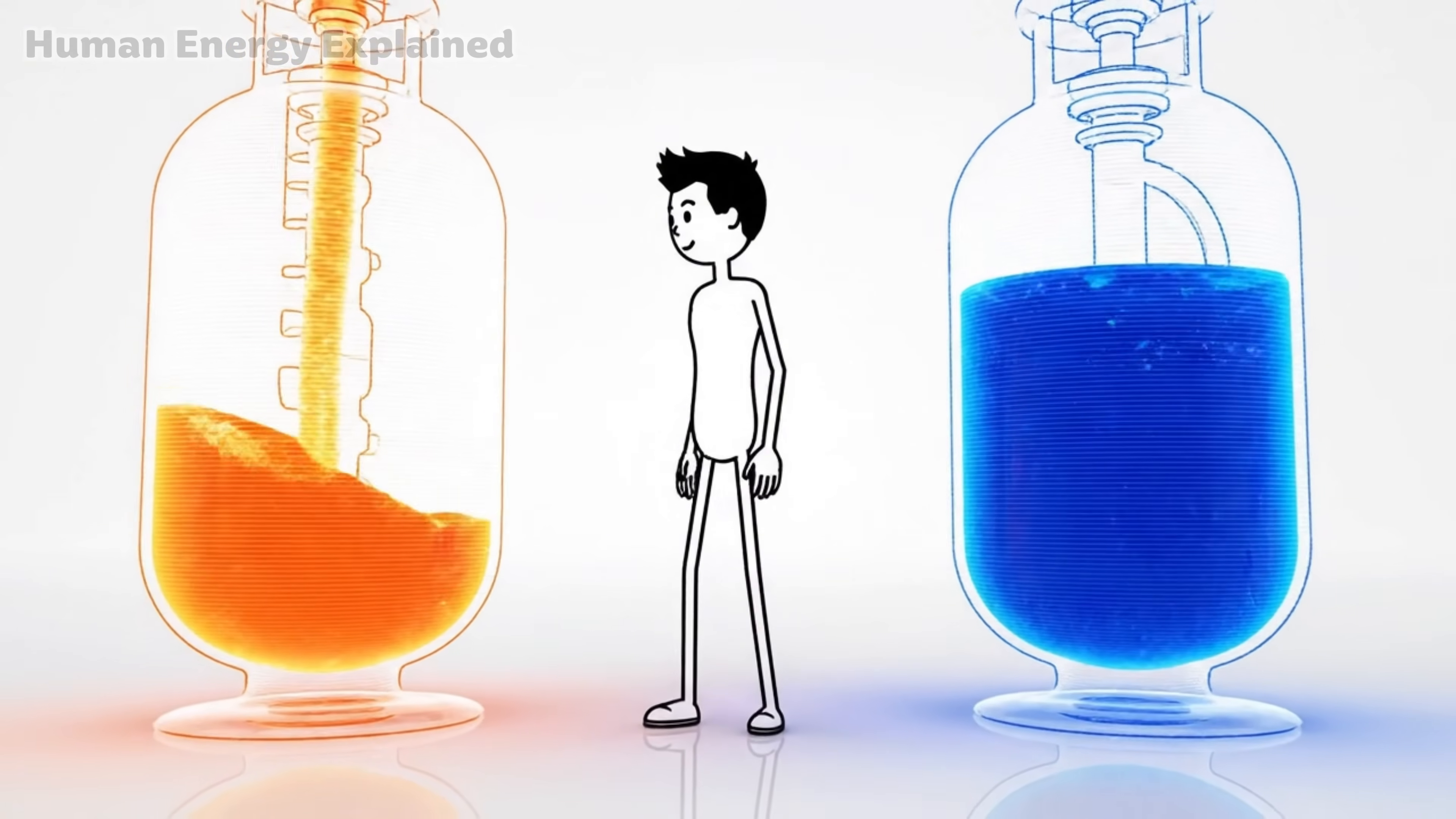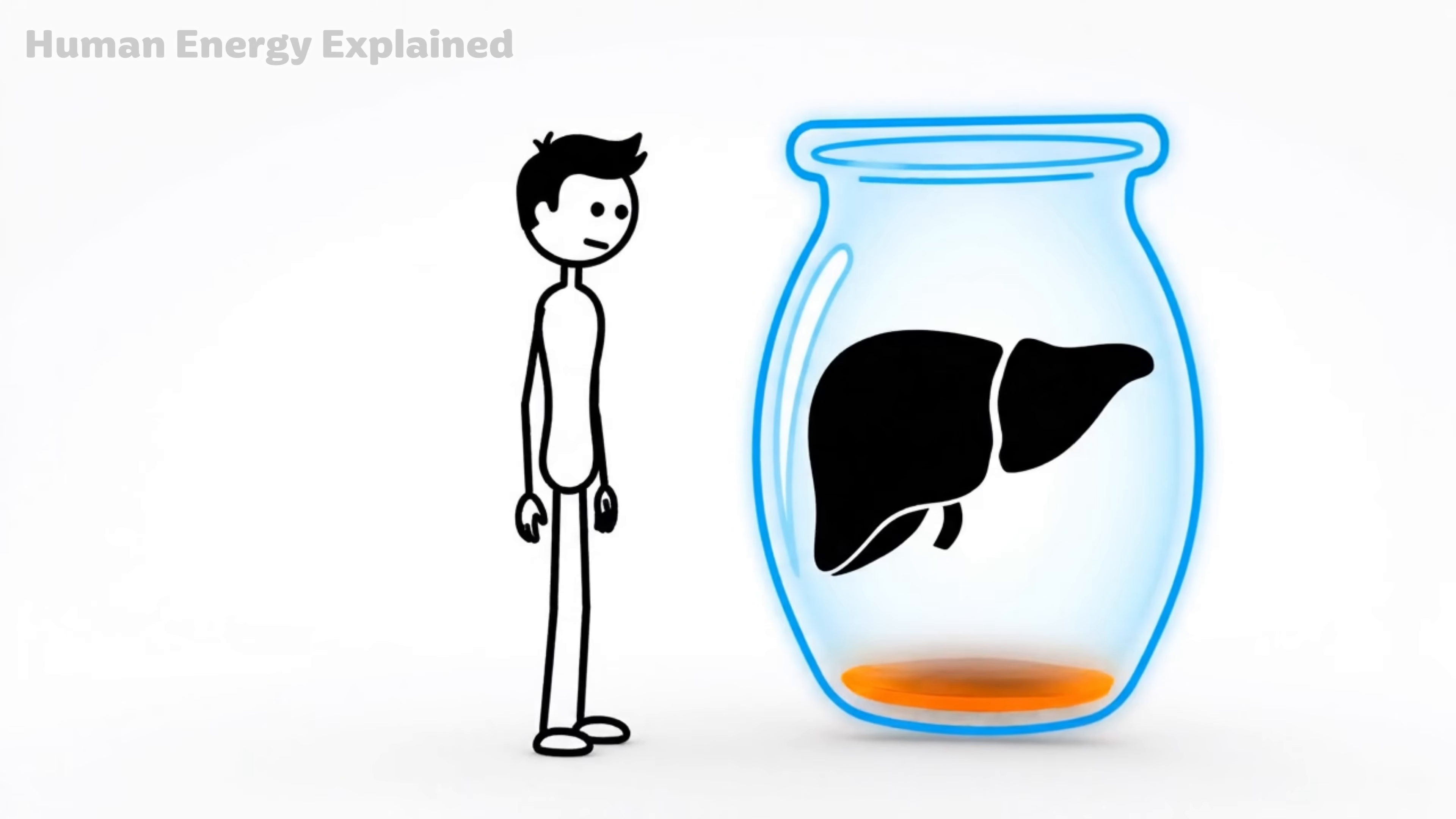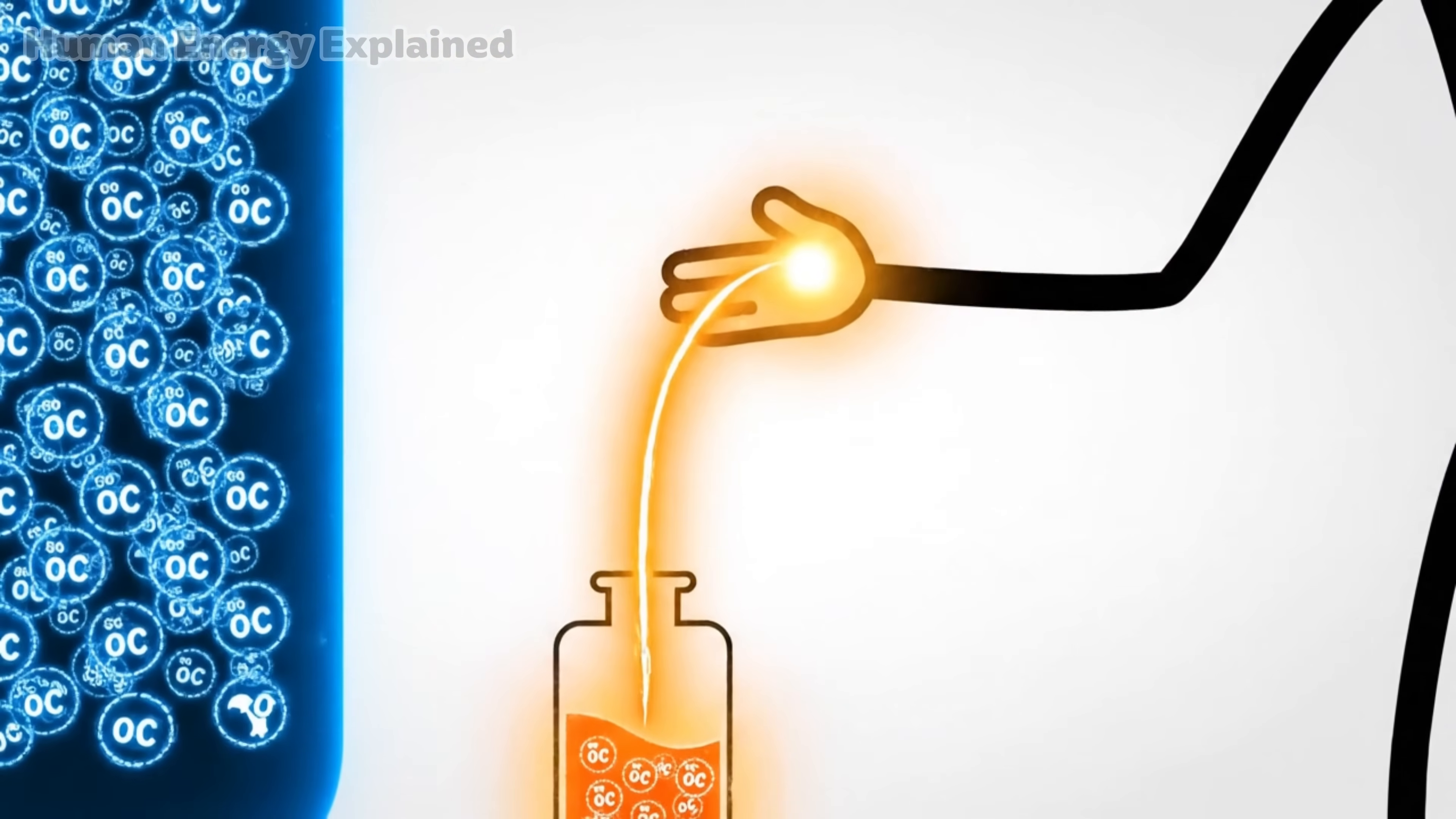Here's what's actually happening. Think of your body as having two fuel tanks. The first is a small glucose tank stored in your liver as glycogen. It's quick energy, easy to access, but limited. Maybe 12 to 24 hours worth at most. The second tank is massive. It's your fat reserves, tens of thousands of calories just sitting there waiting.